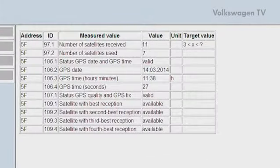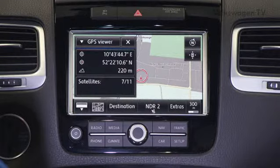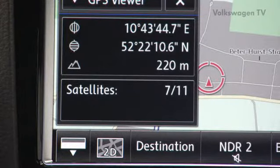The navigation system now displays the satellites according to the signal strength received. The GPS viewer also displays the number of satellites available.